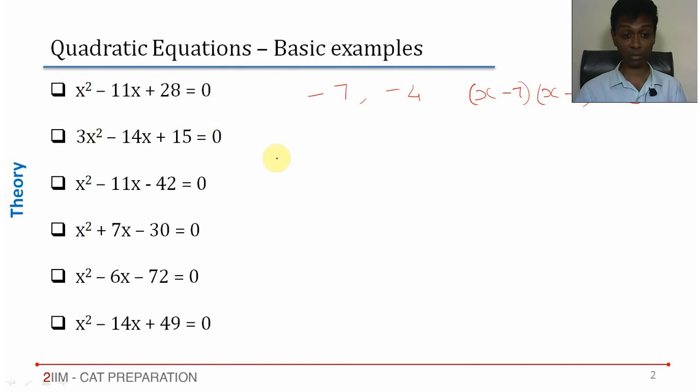The next one: 3x² - 14x + 15 = 0. We have to split -14 to get a product of 45. Remember, the product is not 15, product should be 45 and we are splitting -14.